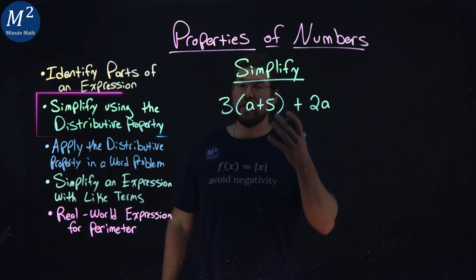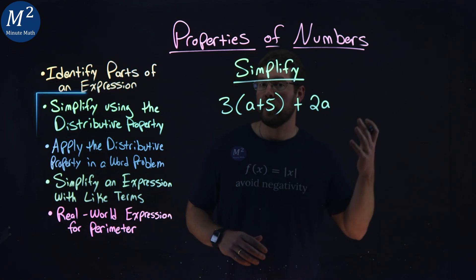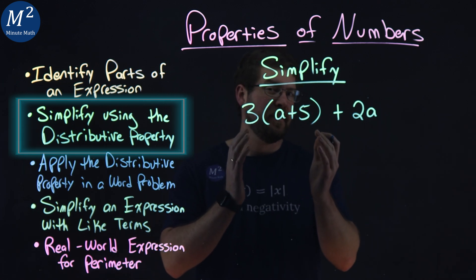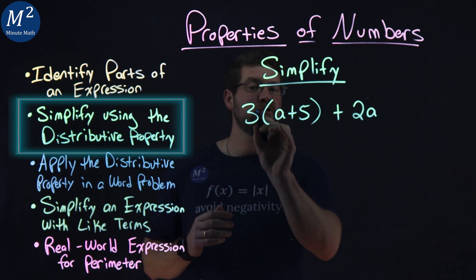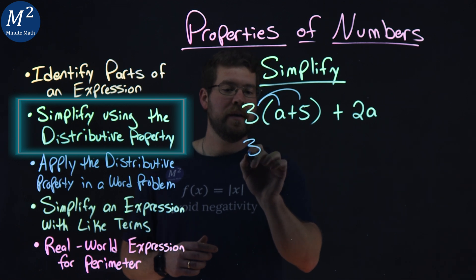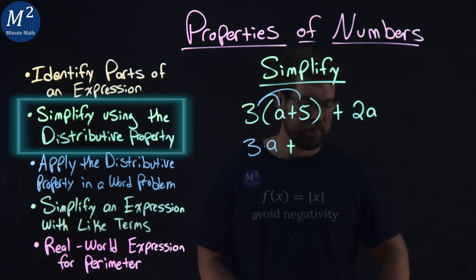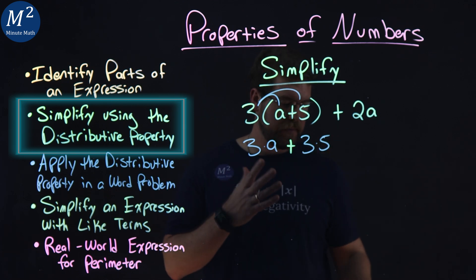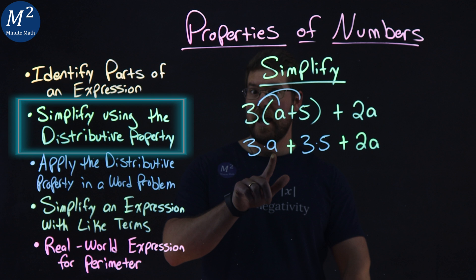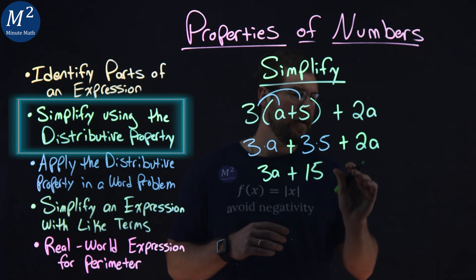Simplify our expression using the distributive property. Our expression is 3 times in parentheses a plus 5, then plus 2a on the right. The first thing here is I want to apply the distributive property — this 3 times the a plus 5 in parentheses. We know inside the parentheses we can't simplify that anymore, so we're going to distribute this 3 to both parts. The 3 is going to get multiplied by the a as well as the 5. So first we have 3 times a, then we're adding 3 times 5, and then we just bring down the 2a. Now we can simplify: 3 times a is 3a, plus 3 times 5 is 15, then bring down the 2a.